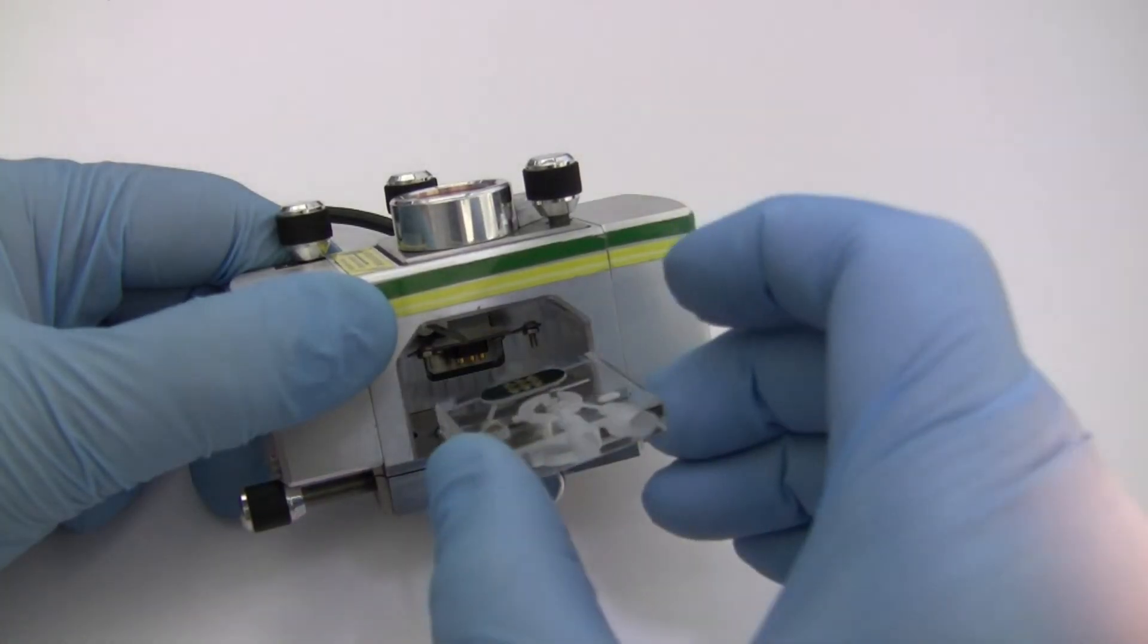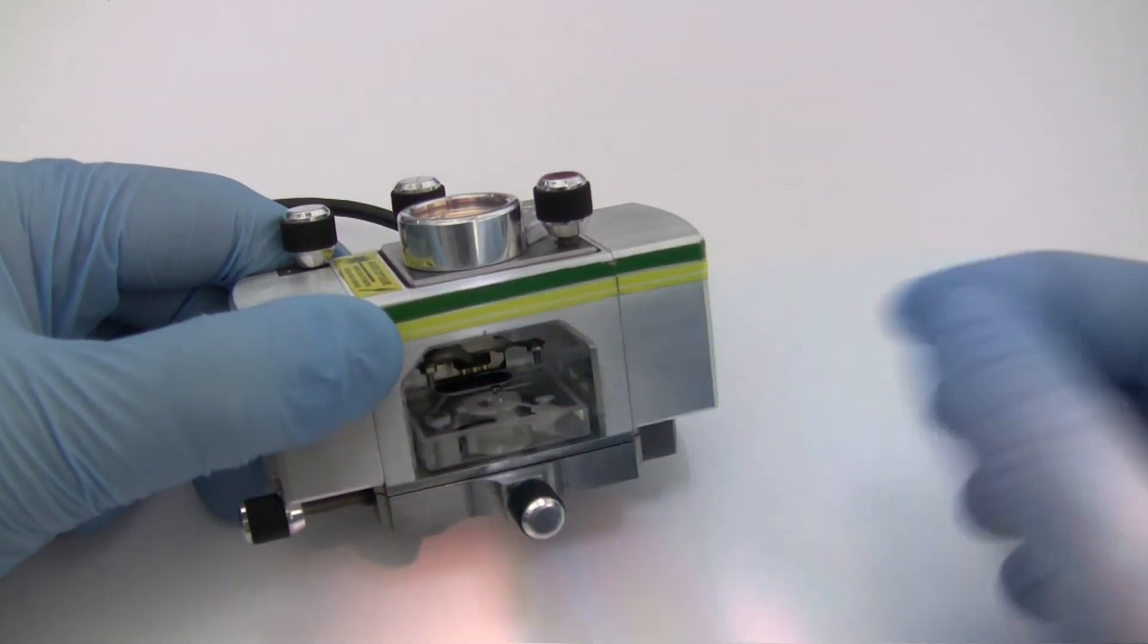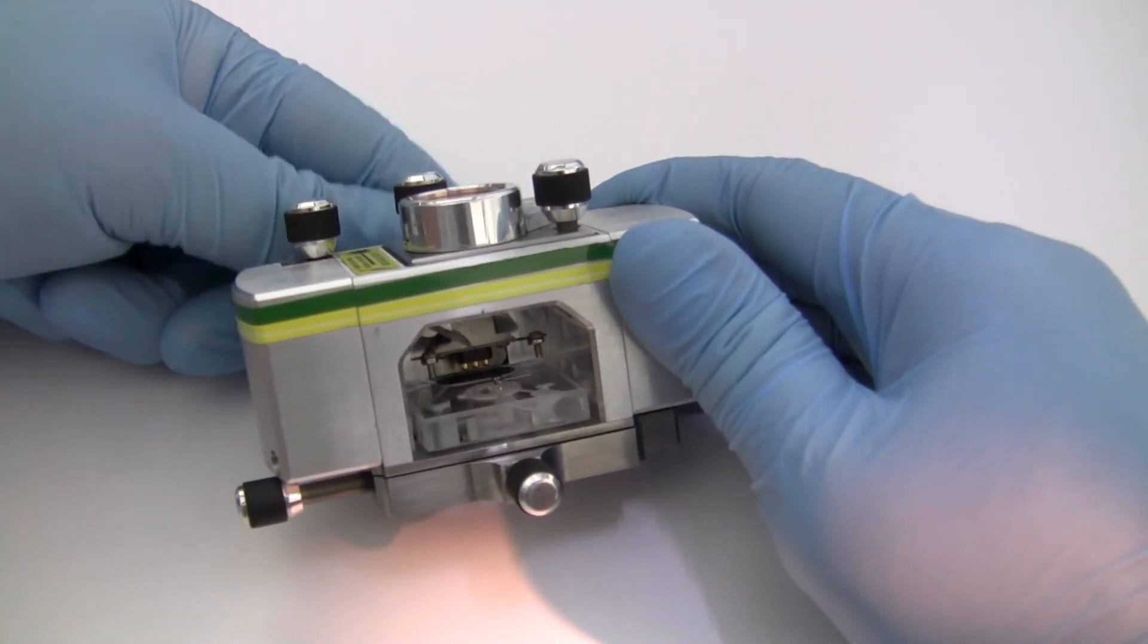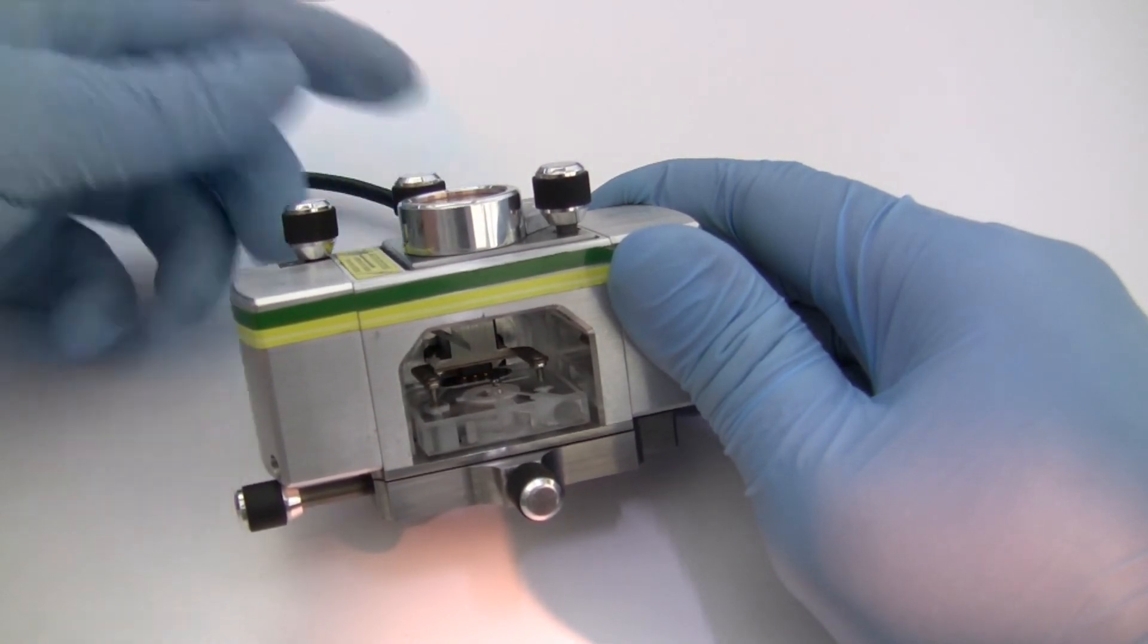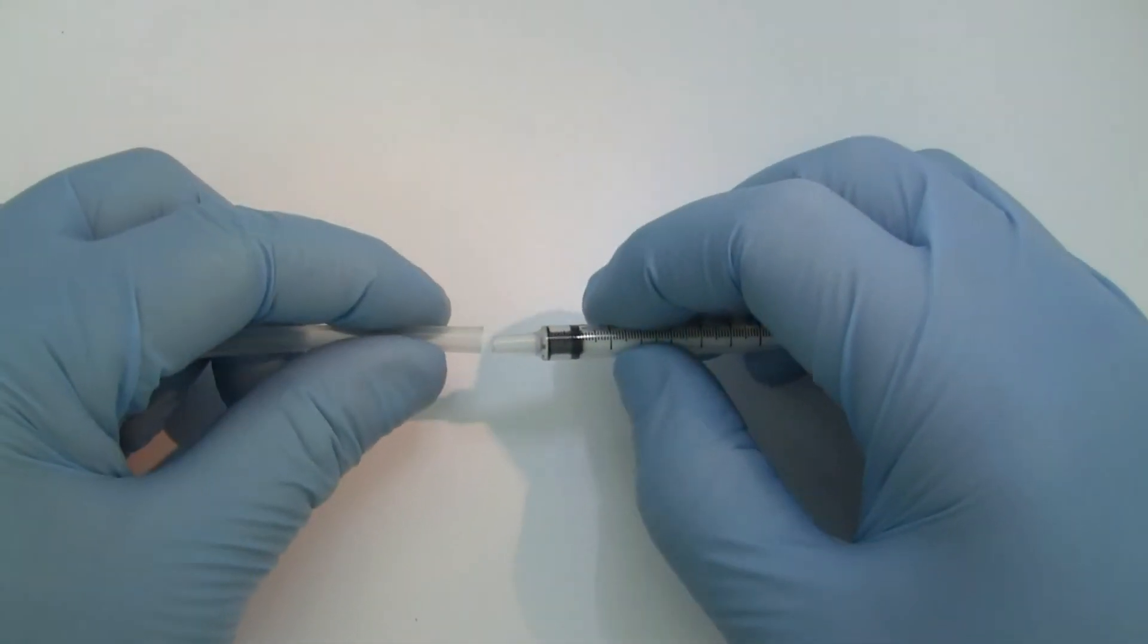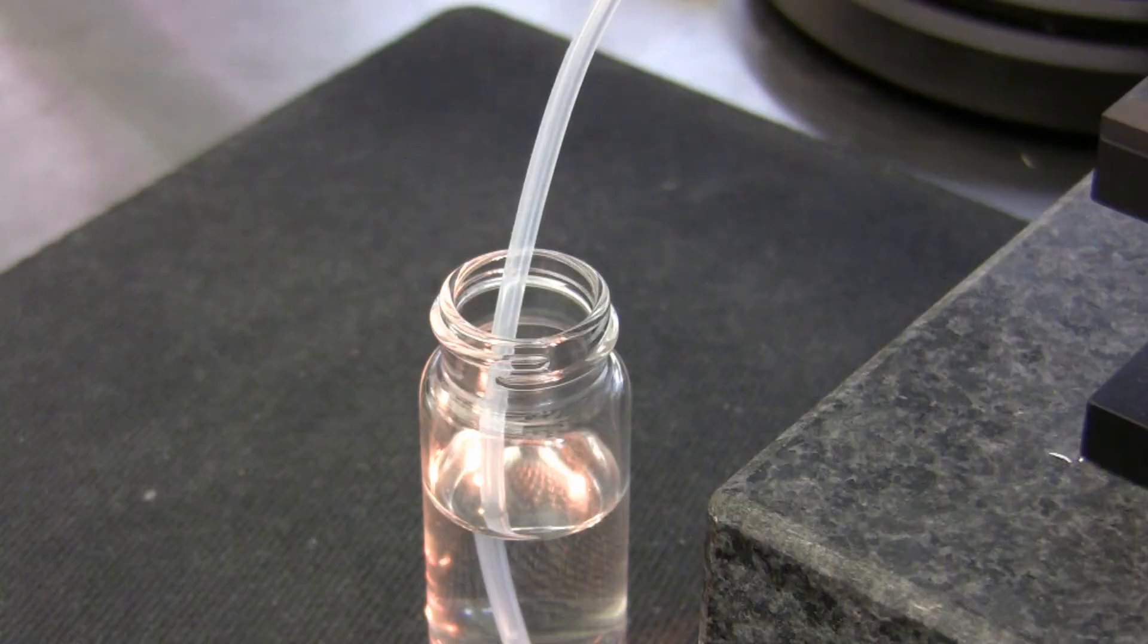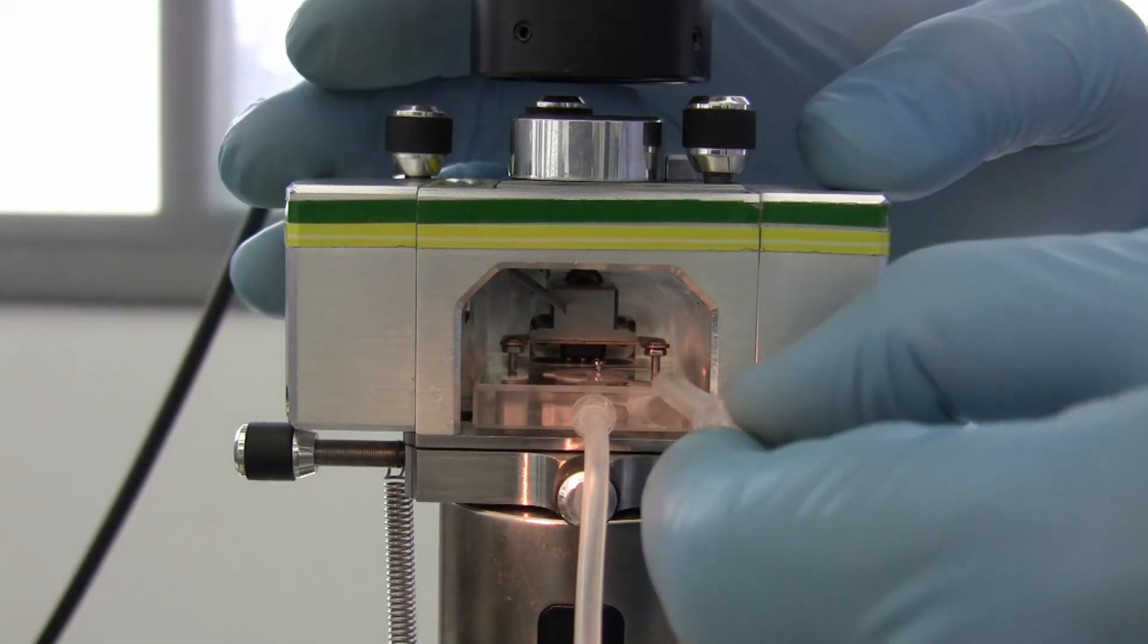Place the probe carrier into the multimode head by inserting the carrier into the kinematic mount and then turning the clamping screw to lower the locking clamp onto the probe carrier. Insert a lure fitting into the drain port. Attach the syringe to the inlet section of tubing and fill it with the liquid solution. Insert the lure fitting into the inlet port.